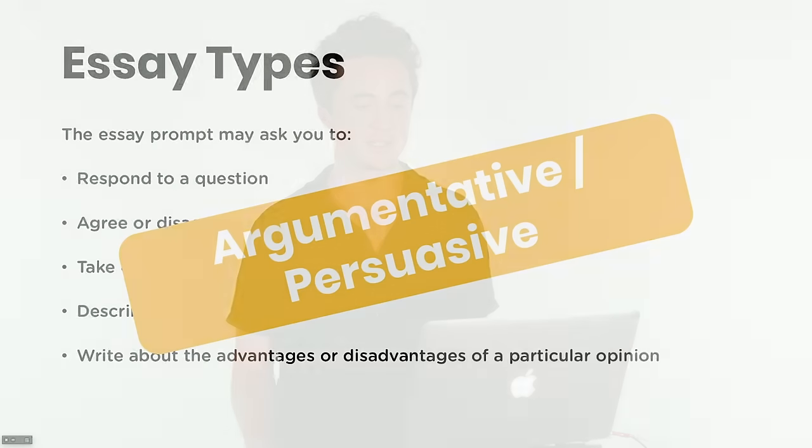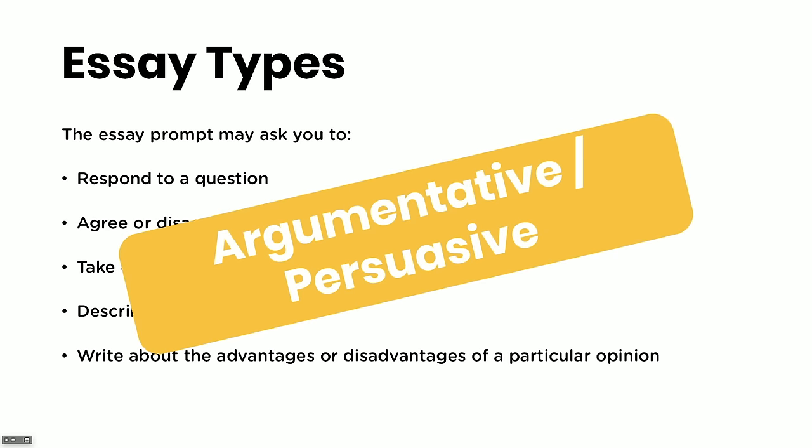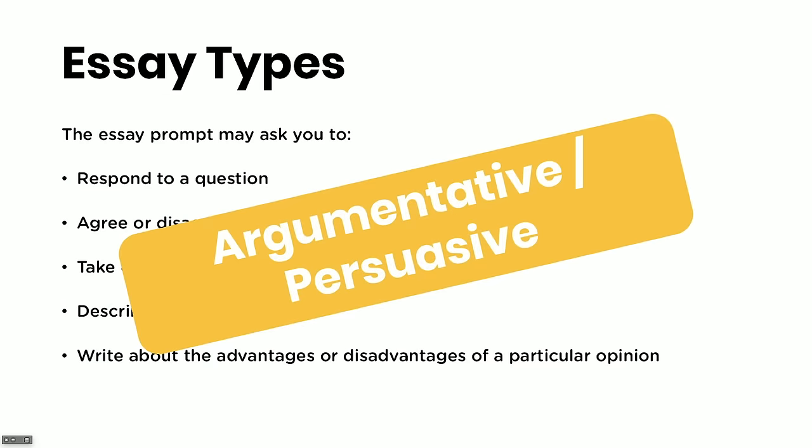Importantly, the type of essay you have to write on test day is an argumentative slash persuasive essay. You're going to get some sort of controversial topic — something about smoking cigarettes, playing video games, obesity — where you're going to have an opinion. And what you're going to do is choose a side. These prompts have two sides; you can argue for or you can argue against. The essay prompts differ in the way they're written, but ultimately it's all about writing an argumentative essay.